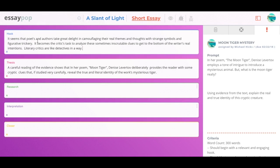Here's what I came up with for this Moon Tiger mystery essay: It seems that poets and authors take great delight in camouflaging their real themes and thoughts with strange symbols and figurative trickery. It becomes the critic's task to analyze these sometimes inscrutable clues to get to the bottom of the writer's real intentions. Literary critics are like detectives in a way. So it's conversational, I'm trying to start a conversation with my reader, making a comparison between them and perhaps a detective.